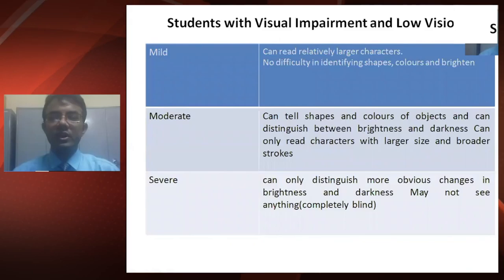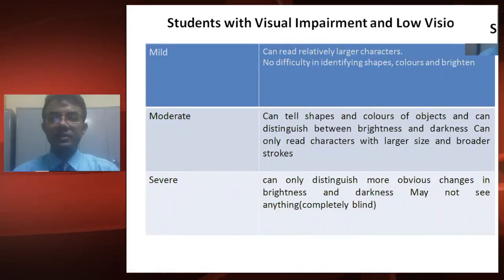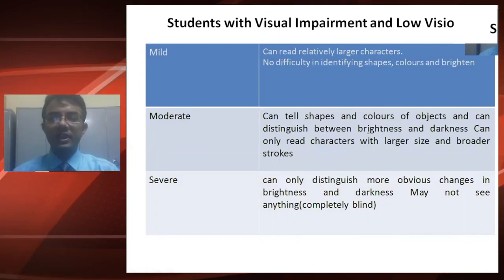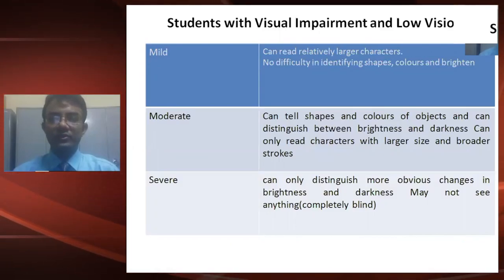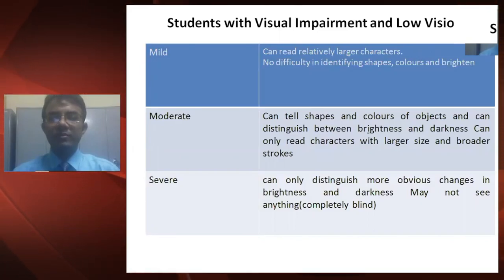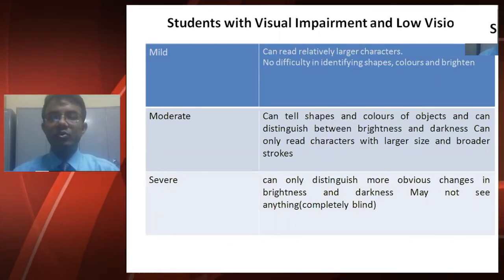Under moderate classification, students with visual impairment and low vision can tell various shapes and colors of objects and can distinguish between brightness and darkness. They can only read characters with larger size and broader strokes.